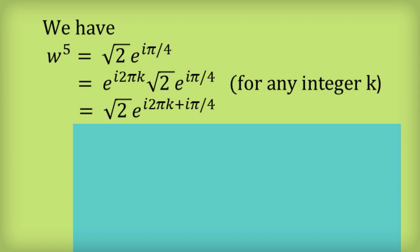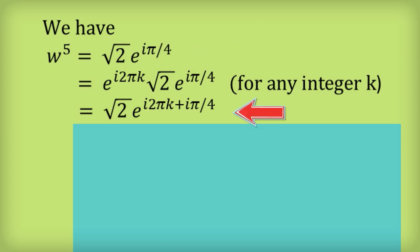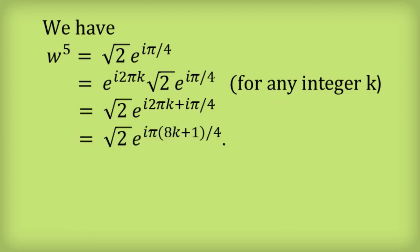Next, I take the square root of 2 out the front. I've now got two powers of e, so I can add the powers, and I get the square root of 2, e to the i 2 pi k plus i pi on 4. Often people will skip this step and just go from the previous step to this one, and that's perfectly fine. Now we can simplify the power of e slightly, and so we get the square root of 2 times e to the i pi times 8k plus 1, divided by 4.